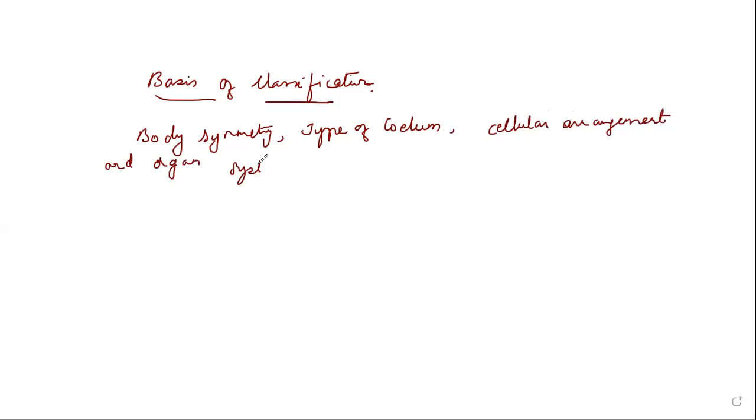Now in this video, let us discuss level of organization. Animal bodies are made up of different types of cells which are organized to form structures and perform various functions. A hierarchy exists in this organization with four types of different levels of organization.